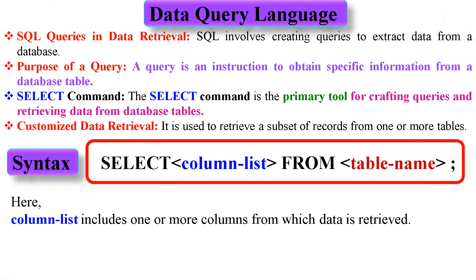SQL queries in data retrieval: One of the most important tasks when working with SQL is creating queries to extract data from a database. A query is an instruction to obtain specific information from a database table. The SELECT command is the primary tool for crafting queries and retrieving data from database tables. It is used to retrieve a subset of records from one or more tables. The syntax of the SELECT command is: SELECT column_list FROM table_name; — where column_list includes one or more columns from which data is retrieved. We will be discussing DDL, DML, and DQL commands in detail in the upcoming videos.